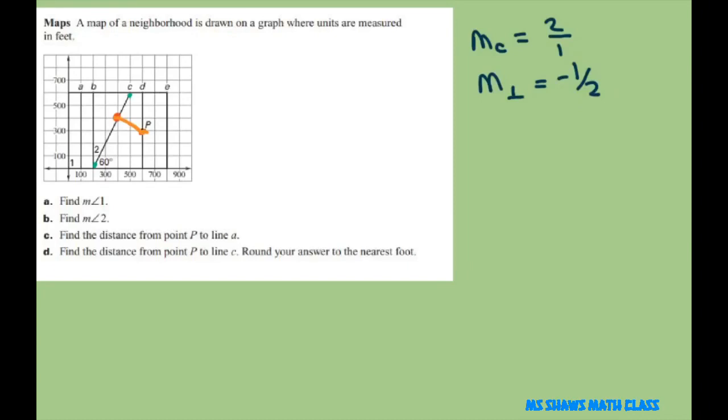Let's write that out. Point P is at X equals 600 and Y equals 300. I'll call this point Q. So Q is at X equals 400 and Y is also 400.